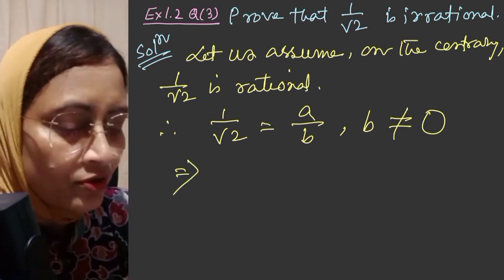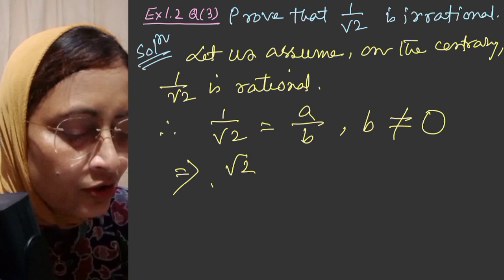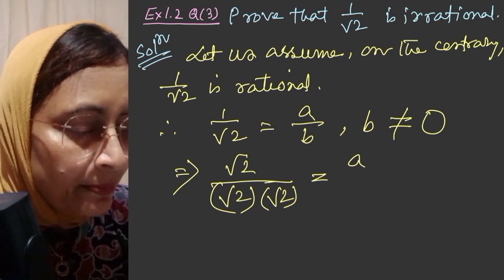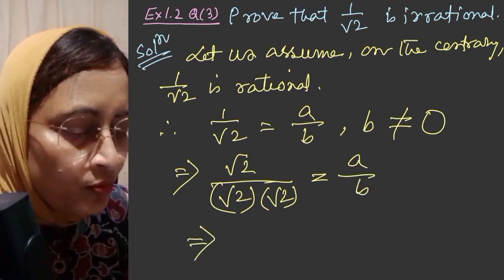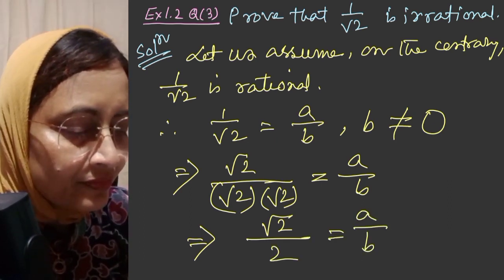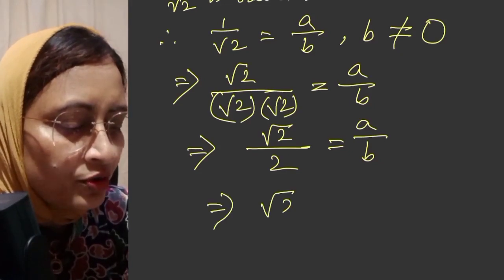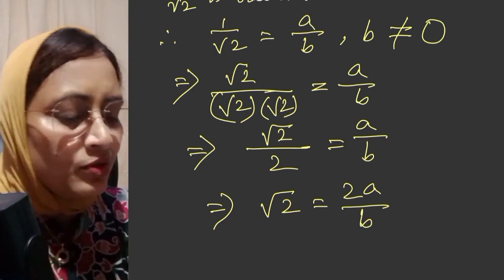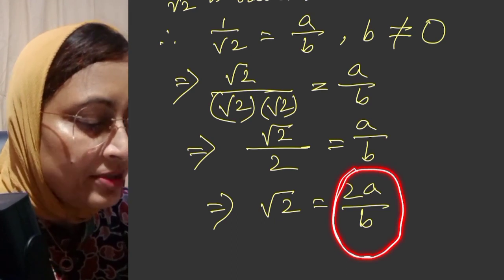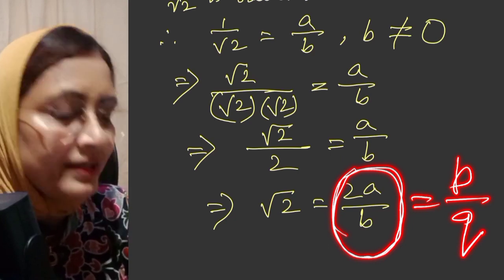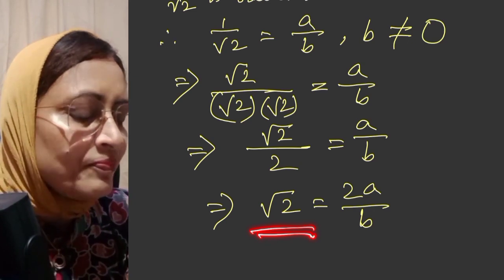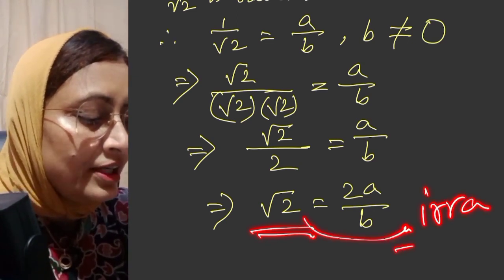This implies root 2 times root 2 equals B divided by A, so root 2 is equal to 2A by B. Since integers are closed under multiplication and division, 2A by B is in rational form — P by Q format — where P and Q are integers and Q is not equal to zero. But this contradicts the fact that root 2 is irrational.